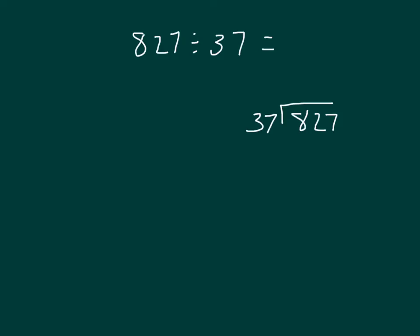Nope, we can't. So we go ahead and look at that 8 with that 2, and the 82, then, within that number is worth 82 tens. And then, so we're thinking now at this point, can we divide 82 tens by 37?